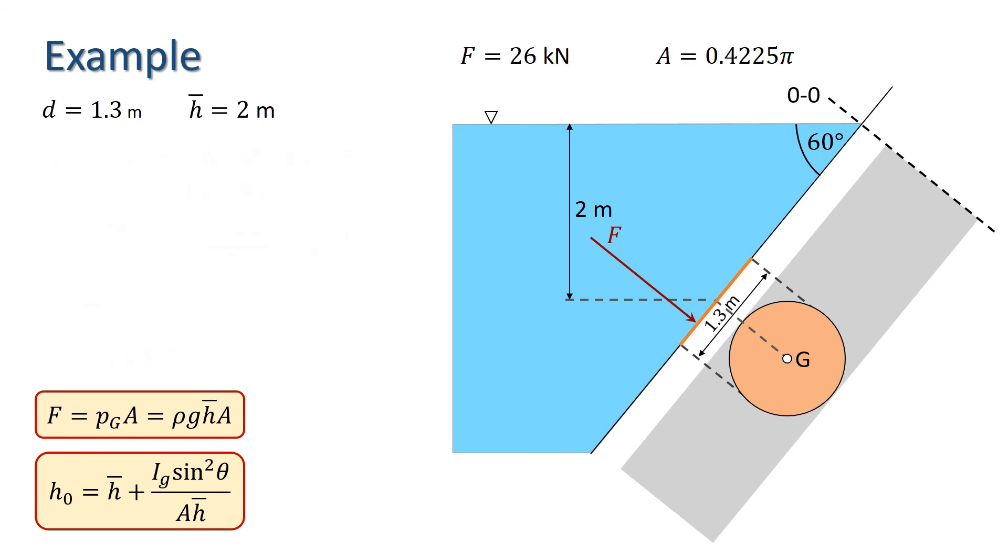So, we have the magnitude of the thrust, and we know that the direction of the thrust is perpendicular to the plane, so all we have left to find is the centre of pressure.